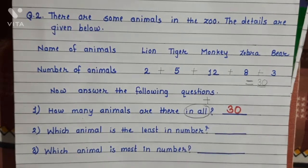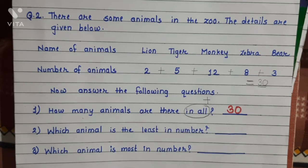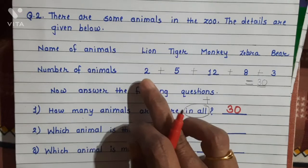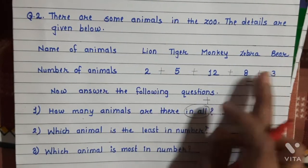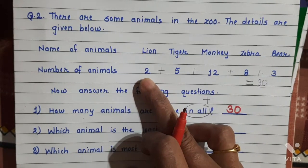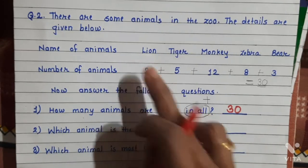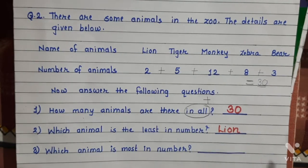Now next one: Which animal is the least in number? Least means less. Which animal is less in number? We have to see the numbers: 2, 5, 12, 8, and 3. From that, 2 is the smallest number — the least. So the animal is Lion. Here we will write Lion as the answer.